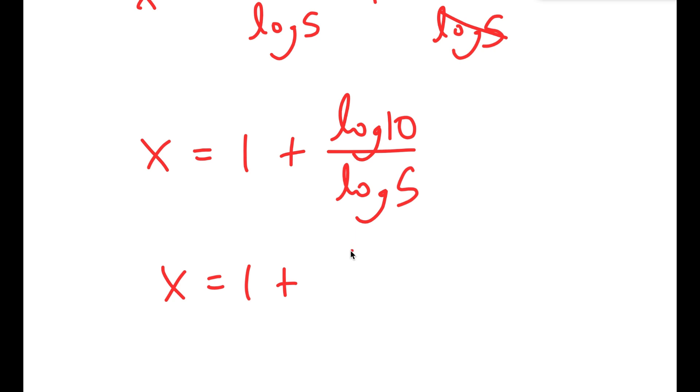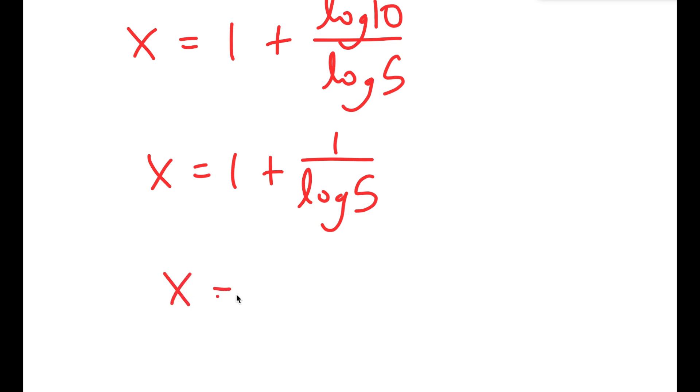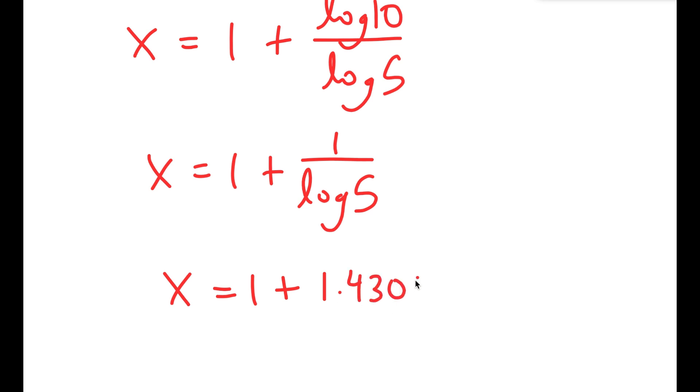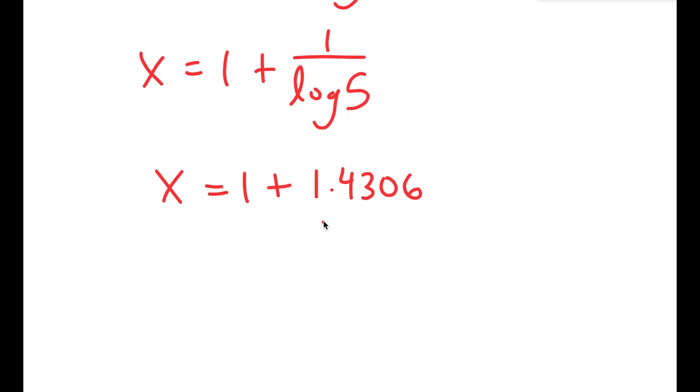Now log 10 is equal to 1, so I get x equals 1 plus 1 over log 5. And 1 over log 5 is equal to 1.4306. So I get x equals 1 plus 1.4306, which is 2.4306. So this is my answer.